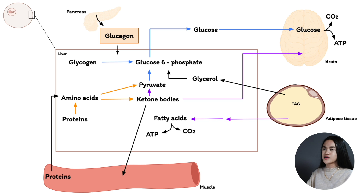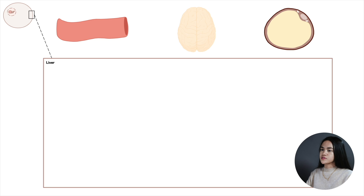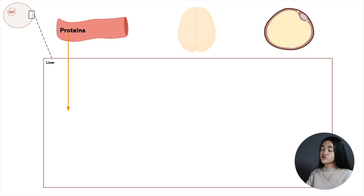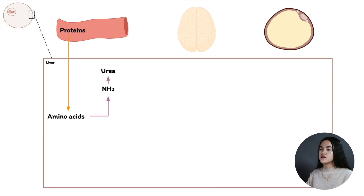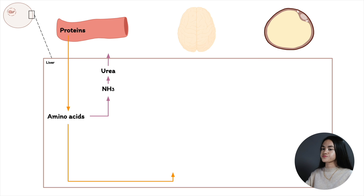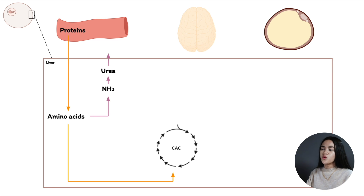During prolonged fasting or starvation, once glycogen stores are depleted, gluconeogenesis becomes the main source of fuel for the brain. Protein is broken down to amino acids via transamination, separating the ammonia from carbon skeletons. The ammonia group is converted to urea and excreted in urine by the kidneys, since ammonia is toxic. Carbon skeletons of glucogenic amino acids are converted to pyruvate or other citric acid cycle intermediates, serving as precursors for gluconeogenesis in the liver.